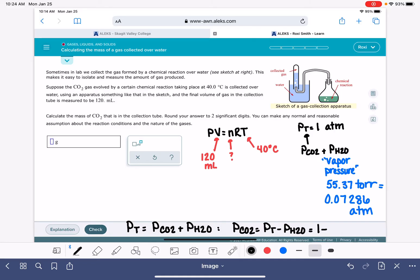One atmosphere minus 0.07286 atmospheres, and that gives us a partial pressure of CO2 of 0.927 atmospheres. So we have everything we need to solve for N.